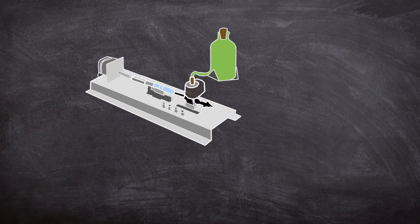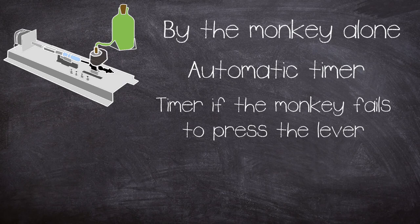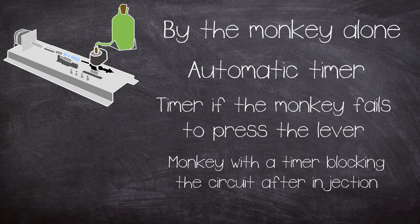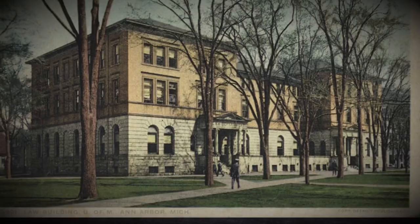The machine could administer a dose in four different ways: one by monkey alone, two by automatic timer, three by the timer if the monkey fails to press the lever within a predetermined time, and four by the monkey with a timer blocking the circuit after injection, preventing the monkey from taking the next injection until a predetermined time had elapsed.